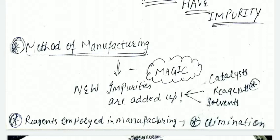Now where do these impurities come from? When we manufacture a drug, we have to add catalysts, reagents, and solvents. What is the basic important thing? Reagents are of two types: the first reagent is employed during manufacturing time, and the second is during elimination time.